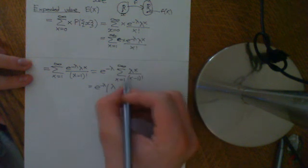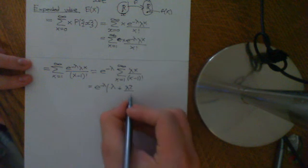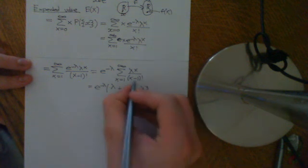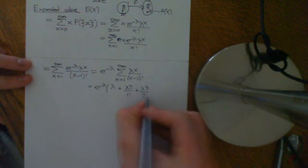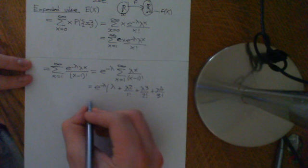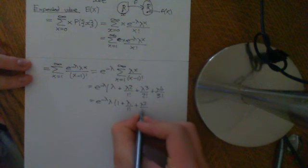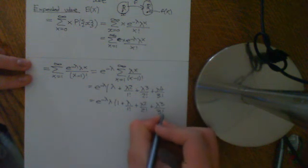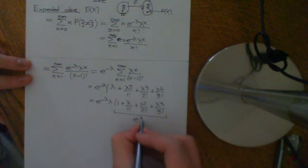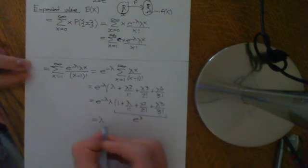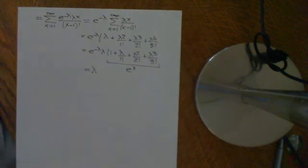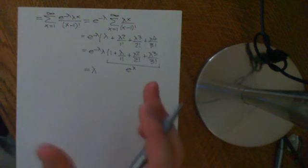Writing out the terms: for x equals 1, we get lambda over 0 factorial; for x equals 2, lambda squared over 1 factorial; for x equals 3, lambda cubed over 2 factorial; then lambda to the 4 over 3 factorial, and so on. Pulling out a factor of lambda gives lambda times (1 + lambda over 1 factorial + lambda squared over 2 factorial + lambda cubed over 3 factorial + ...), which is the Taylor expansion of e to the lambda. So this cancels with e to the negative lambda, and we find the expected value of the standard Poisson distribution is lambda — the parameter of the Poisson distribution. You can let lambda be any real number and you will still get a valid PMF.